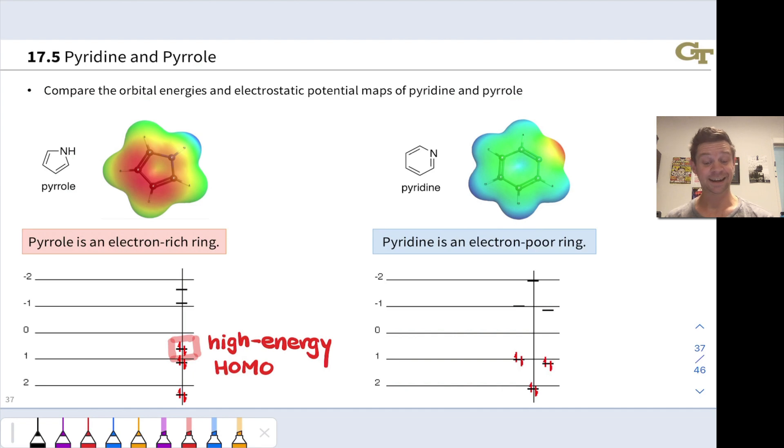Pyridine has a high energy HOMO, high energy, highest occupied molecular orbital. Notice very high energy electrons right here relative to pyridine and even relative to benzene. By contrast, pyrrole has a low energy LUMO, lowest energy unoccupied molecular orbital is relatively low in energy relative to benzene and certainly relative to pyrrole. This makes pyridine more electrophilic and pyrrole more nucleophilic.